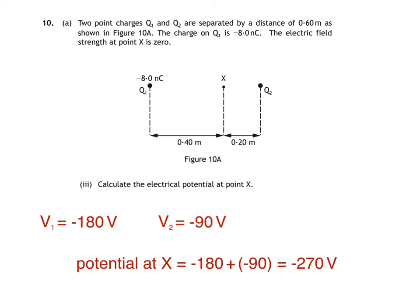The next part of the question asks us to calculate the electrical potential at a point above point X. Here I'm highlighting the positions of Q1, X and Q2 to make it easier to identify them in the next diagram.